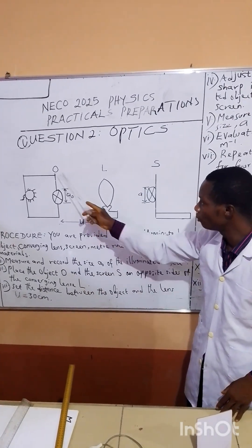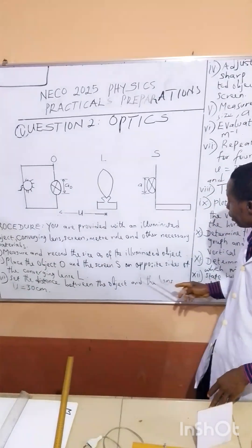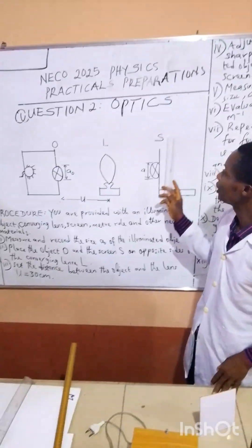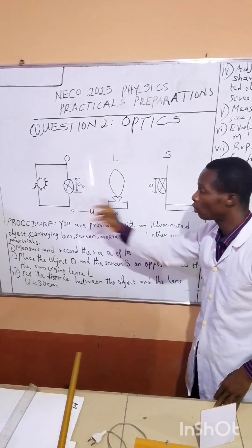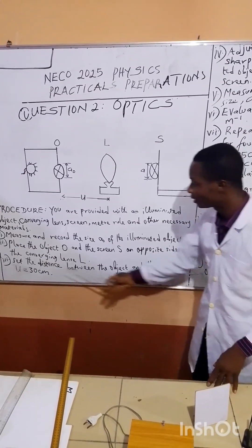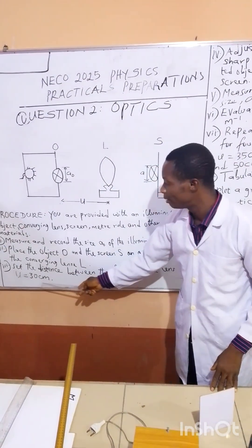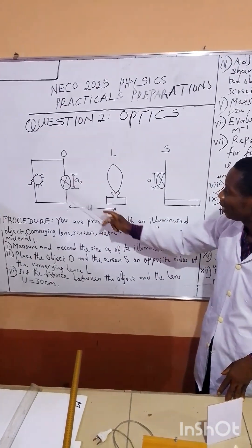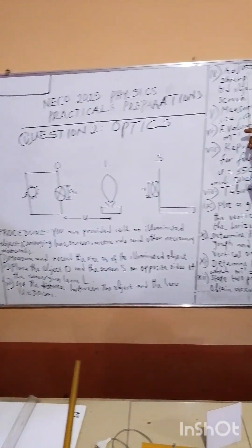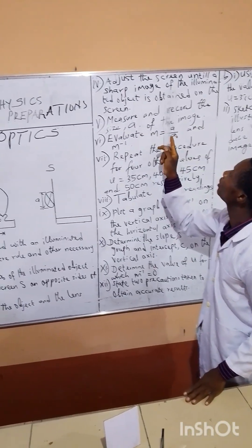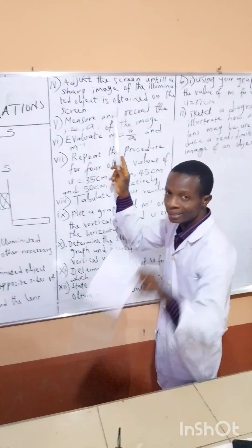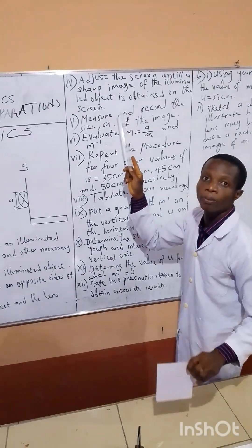Then place the object O and the screen S on opposite sides of the converging lens. The object is here, the screen is here, while the lens is at the middle. Then set the distance between the object and the lens U equals 30 cm. We are starting with 30 cm. Then adjust the screen until a sharp image of the illuminated object is obtained on the screen. You have to adjust the screen until you obtain the sharp image.